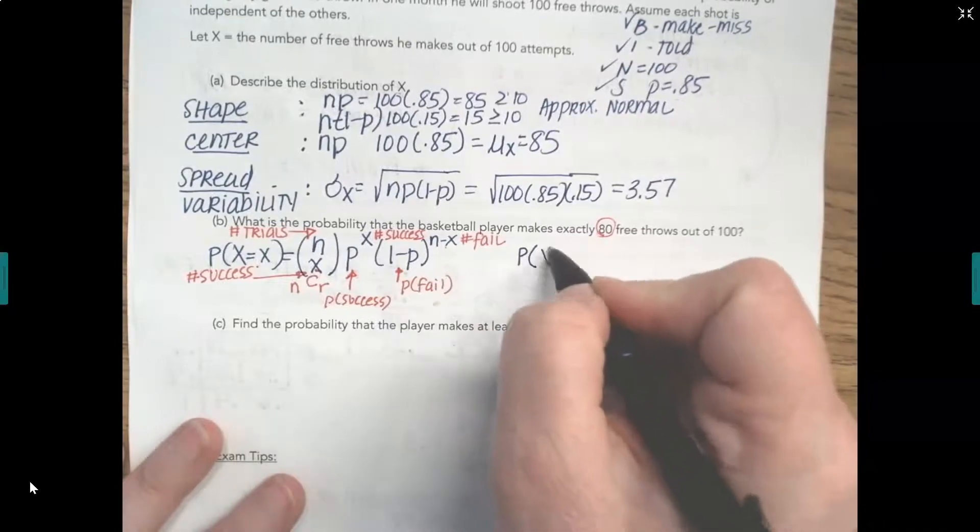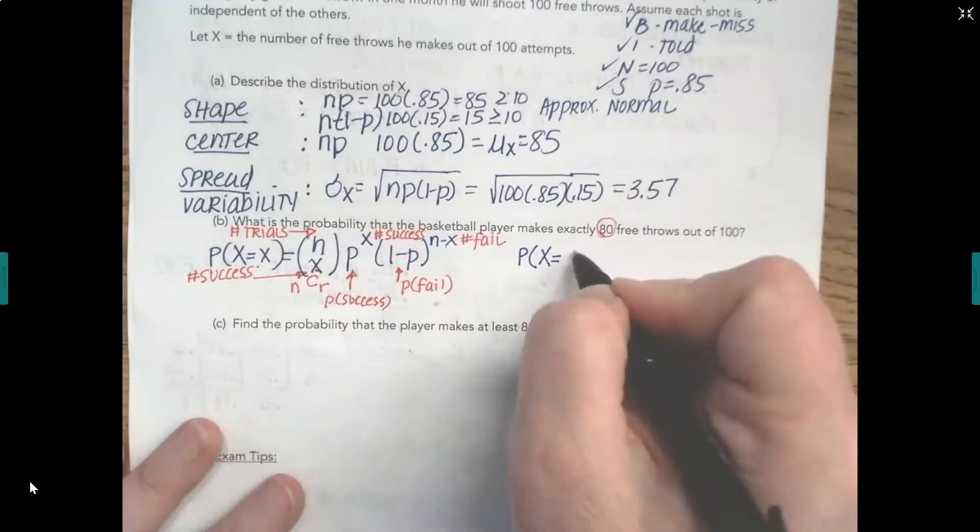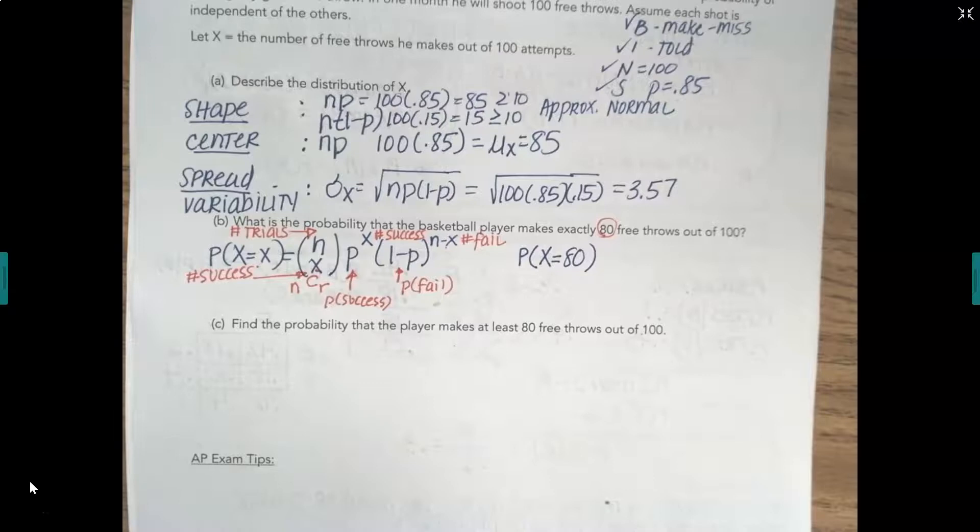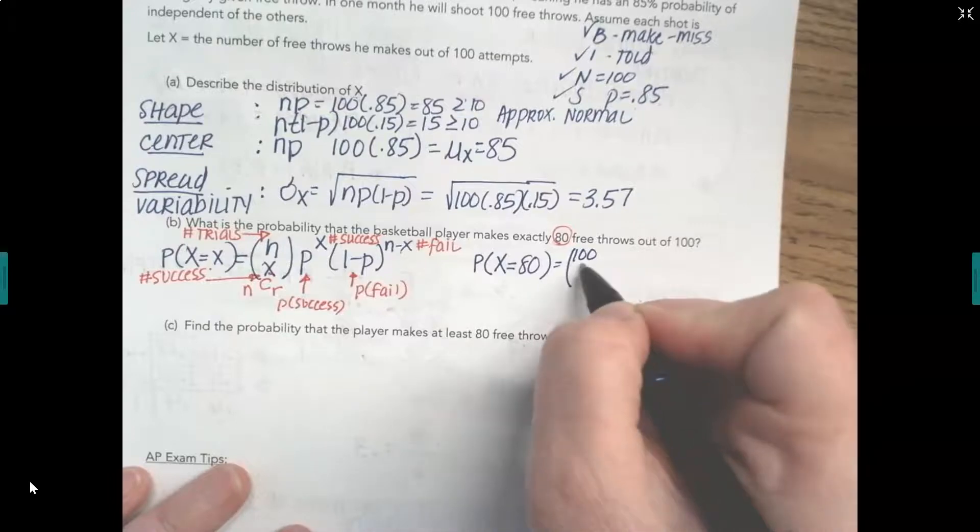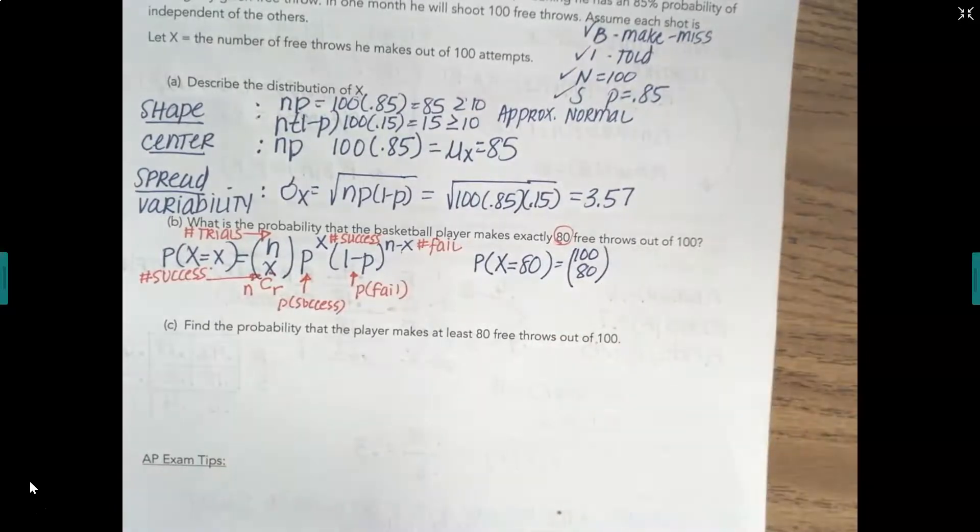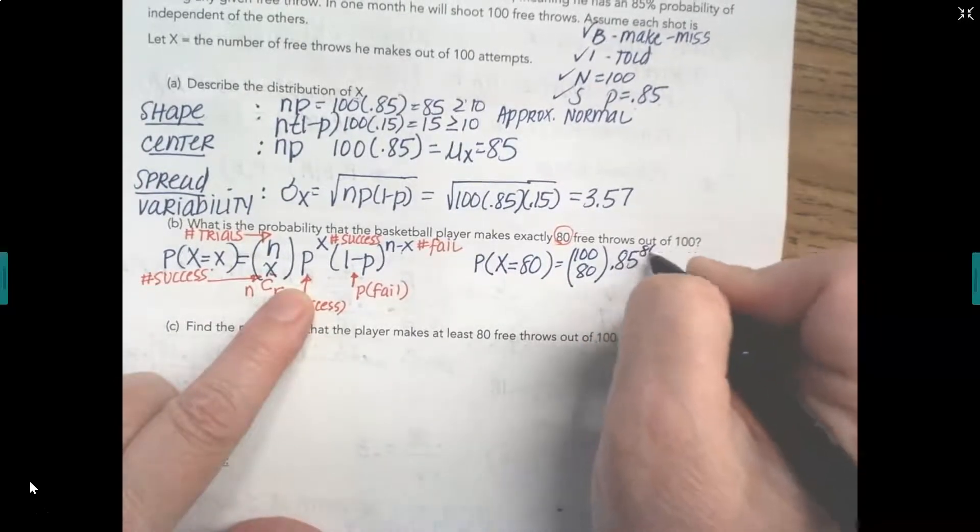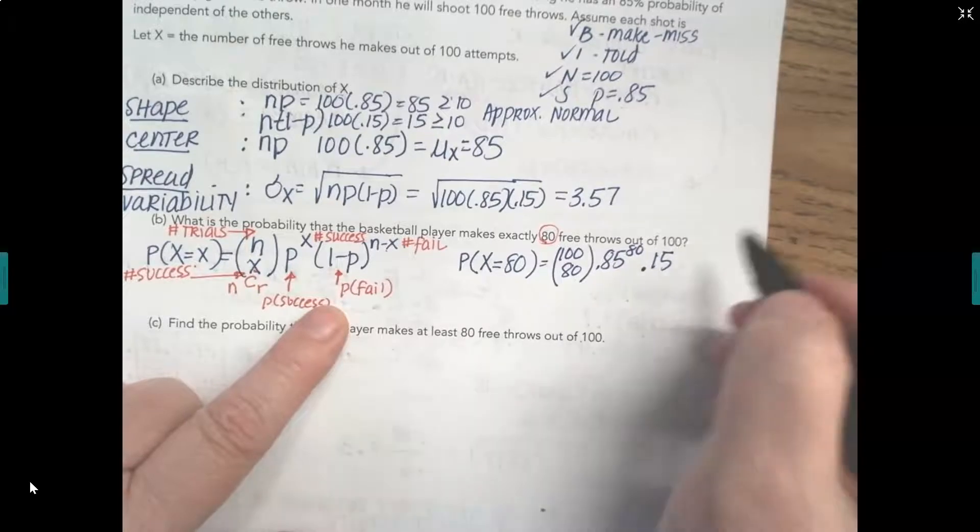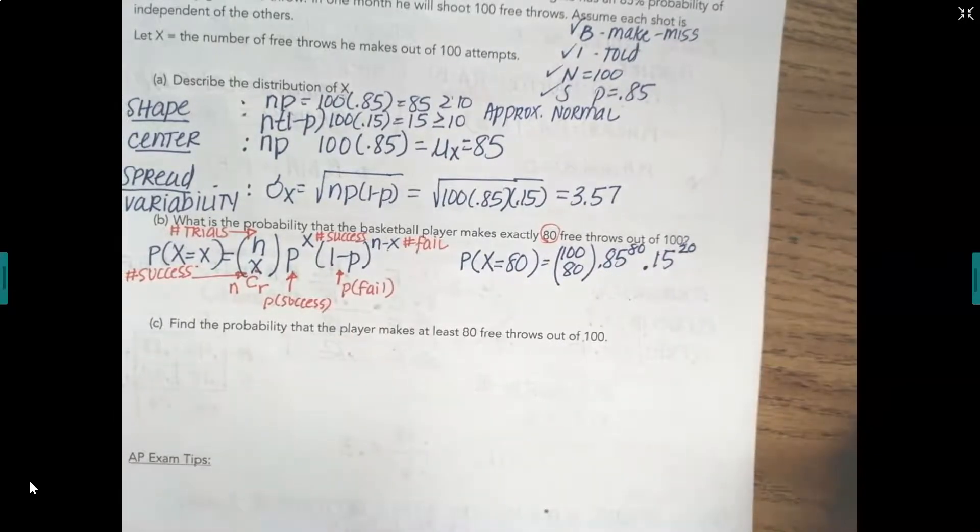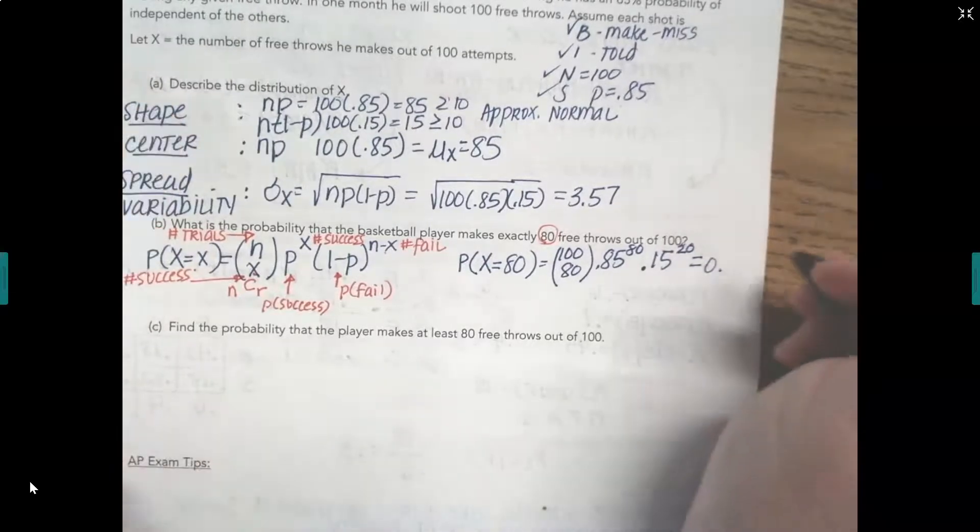So we can set this up like we would using the formula. We want to know the probability that the random variable x, the number of free throws he makes out of 100 attempts, we want to know the probability that that x value is 80. So using the formula, we had 100 trials, we want 80 successes. The probability of success is .85, and I want 80 of those. The probability of failure is .15, and if there's 80 successes, that means there's 20 failures out of 100. And so we can put this into our calculator, and we'll get out 0.04.